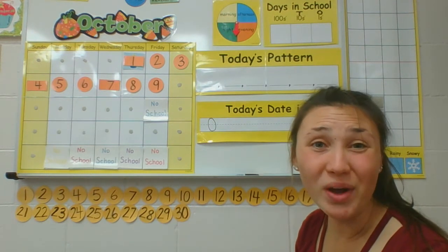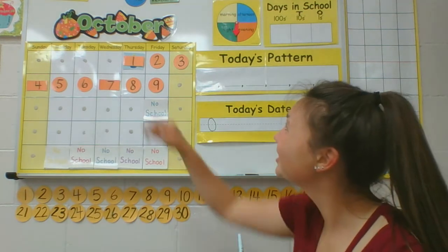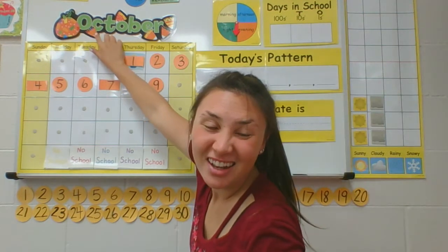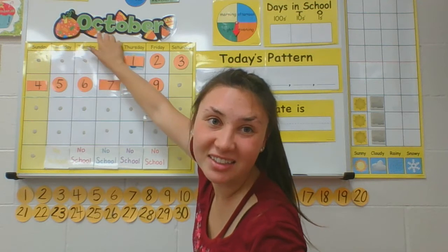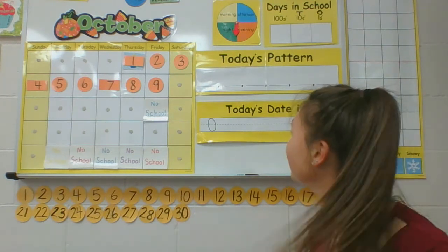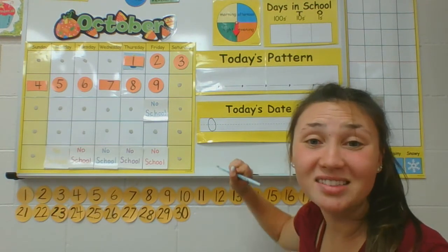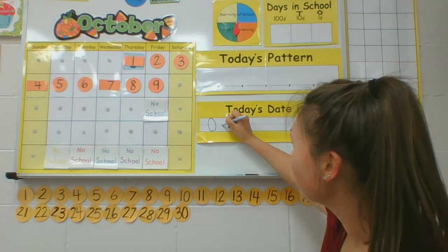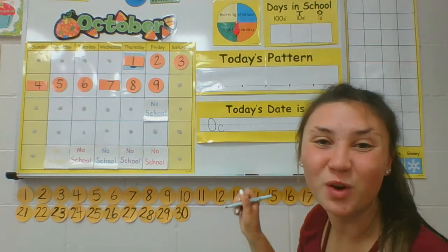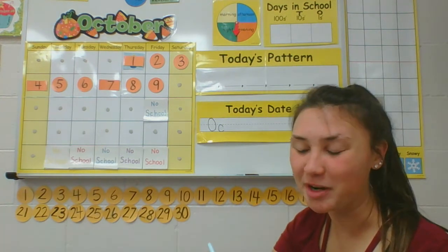What comes after the O in October? A C. A C makes the C sound. So you can make a lowercase C, touching the middle and bottom line for the C in October.